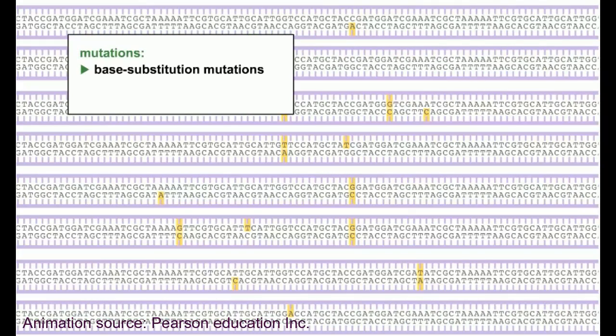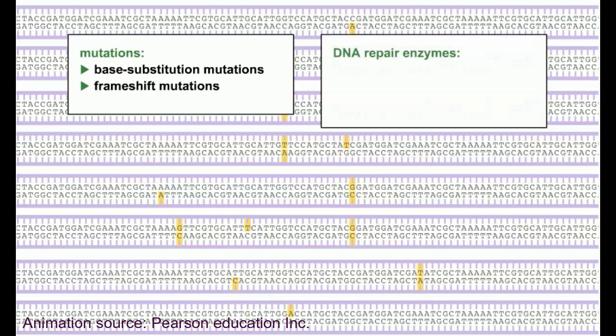There are two main classes of mutations: base substitution mutations and frameshift mutations. Cells have evolved several methods to deal with mutations, including photoliasis, excision repair enzymes, and mismatch repair enzymes.